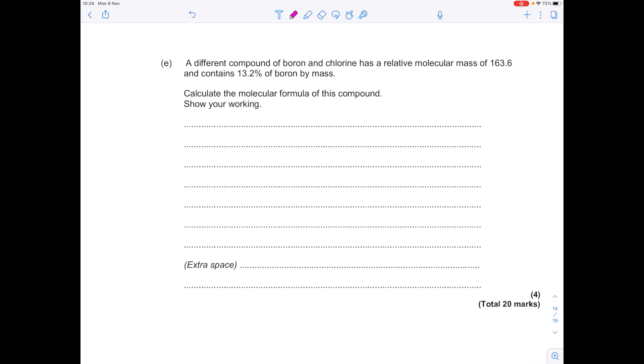A different compound of boron and chlorine has a relative molecular mass of 163.6 and contains 13.2% of boron by mass. Calculate the molecular formula of this compound. It's like an empirical formula calculation, which means my favourite table is back. Remember, we do mass, MR, number of moles.